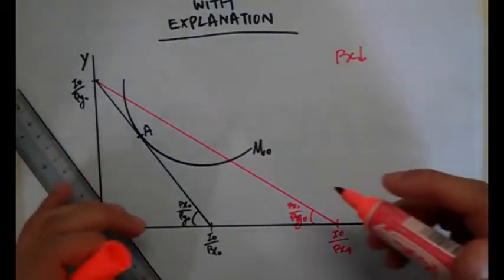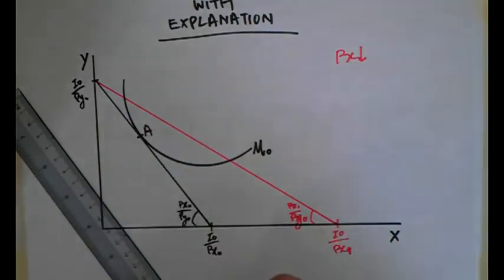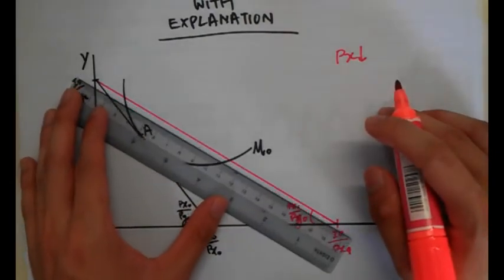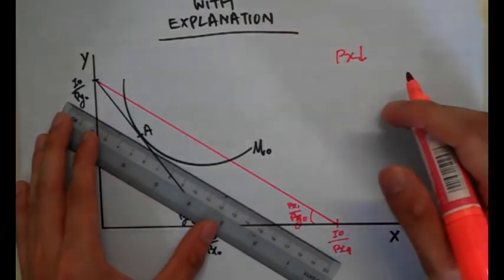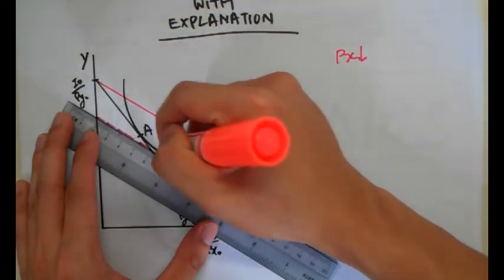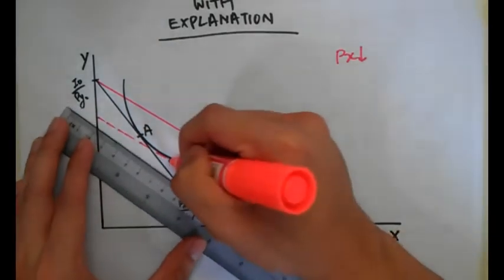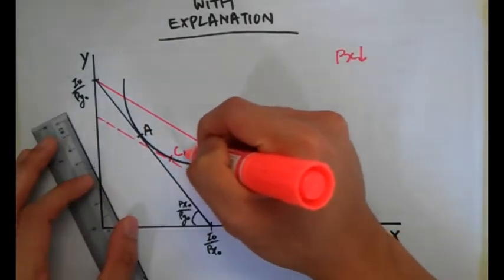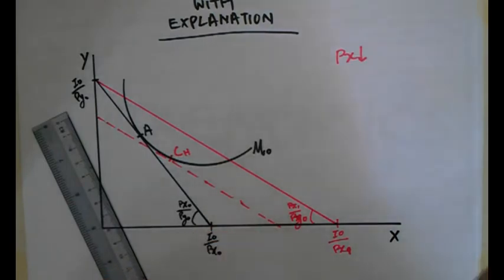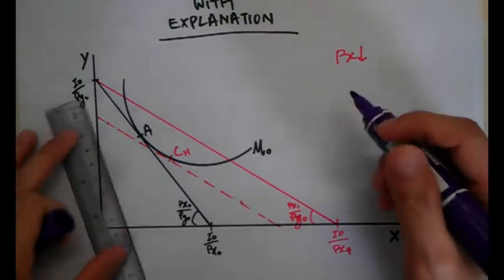Step two: identify point C using the Hicksian definition of real income. There we go — point C under the Hicksian definition of real income. Next, draw a vertical line on point C. Let's use purple for that.